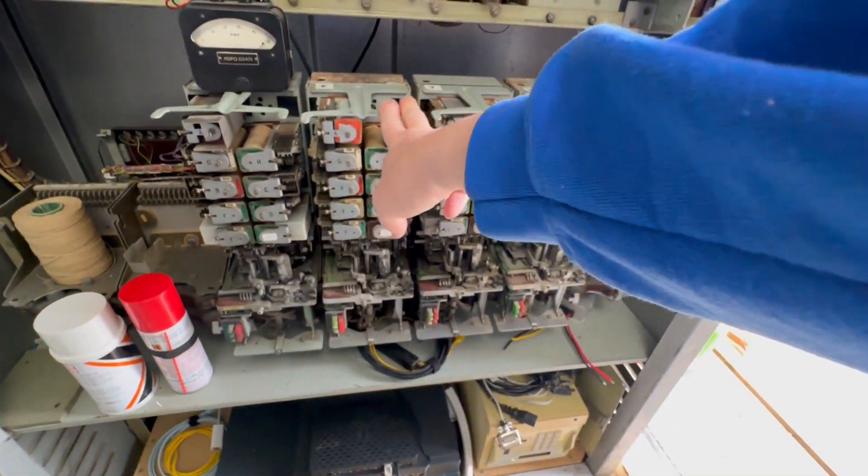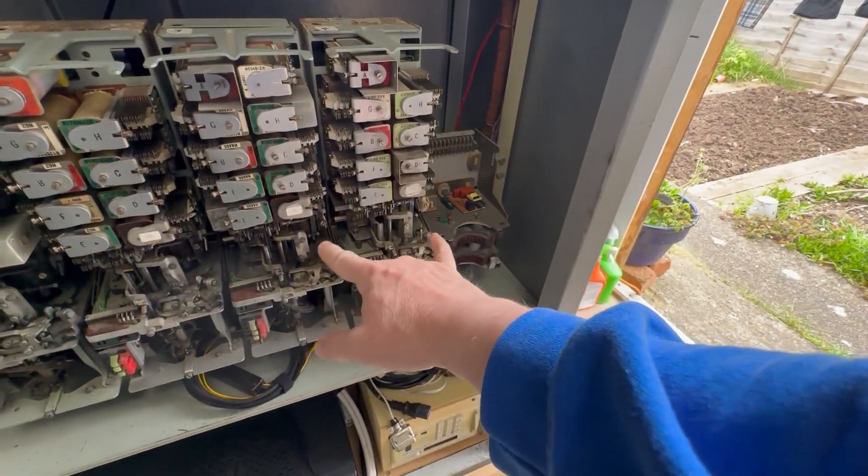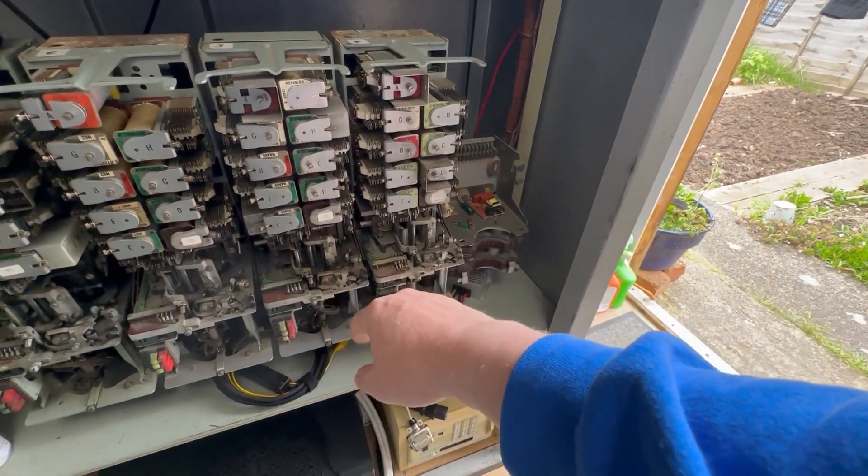At the moment only these two selectors behave the right way. These two are faulty and while they work for local calls they don't work for the tie line.